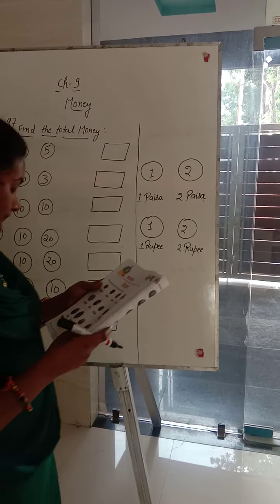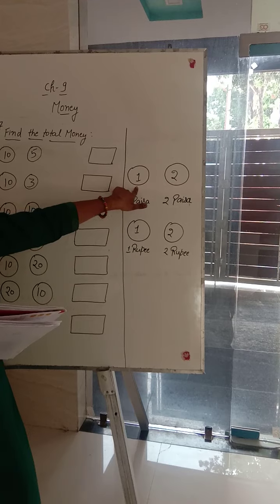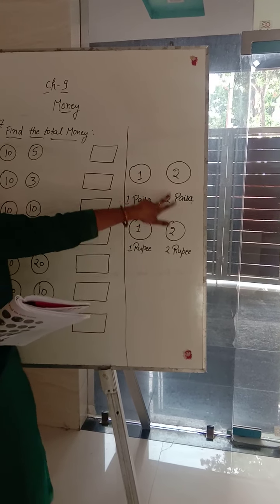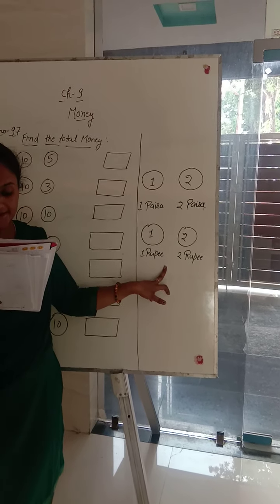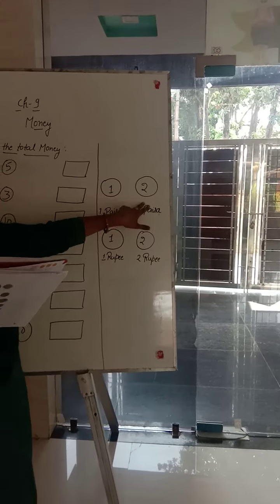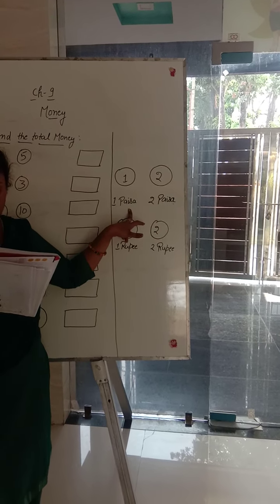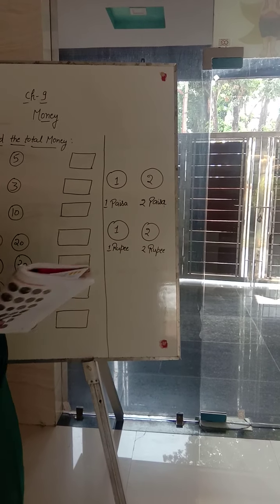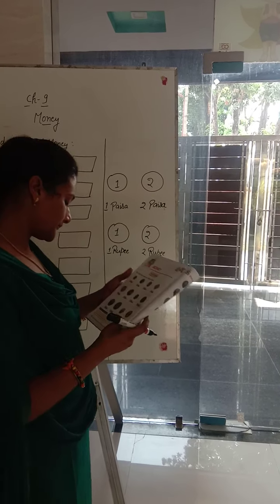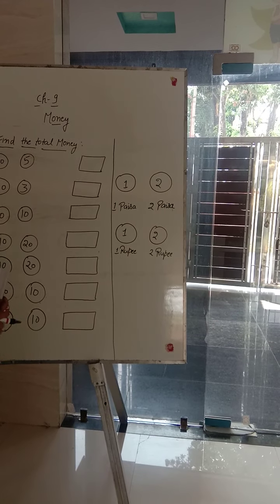So, what do you see? This is 1 paisa, 2 paisa, 1 rupee, 2 rupee. This is the paisa coin — at this time it is not in use. Now let's start our new maths book. Open the page number 97.